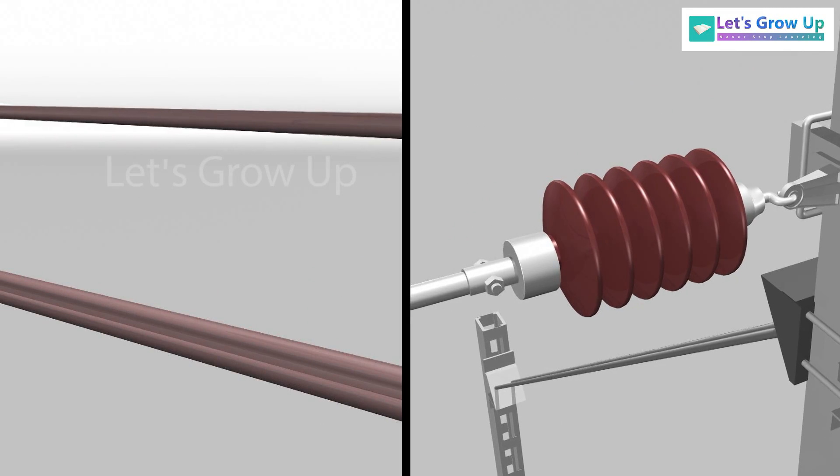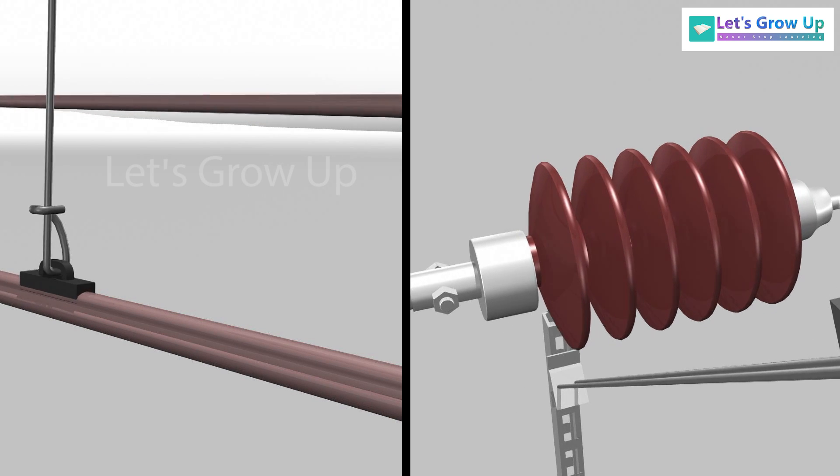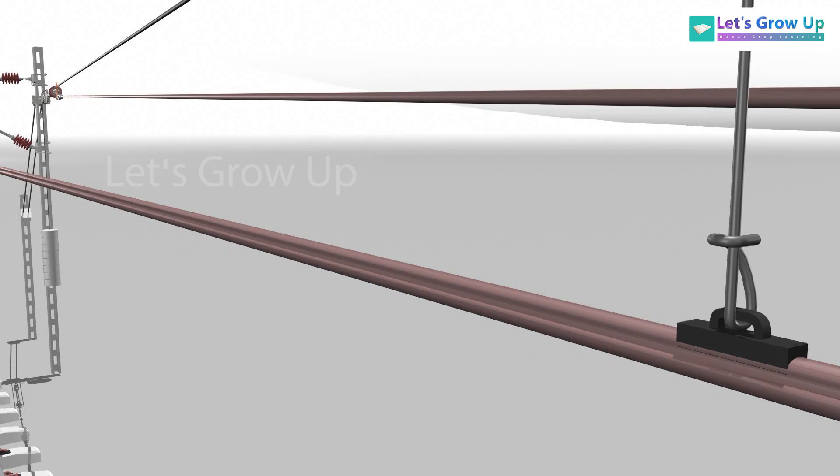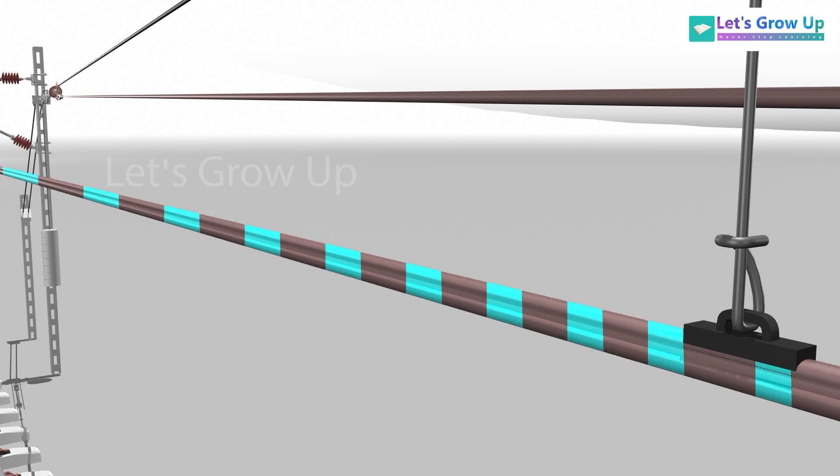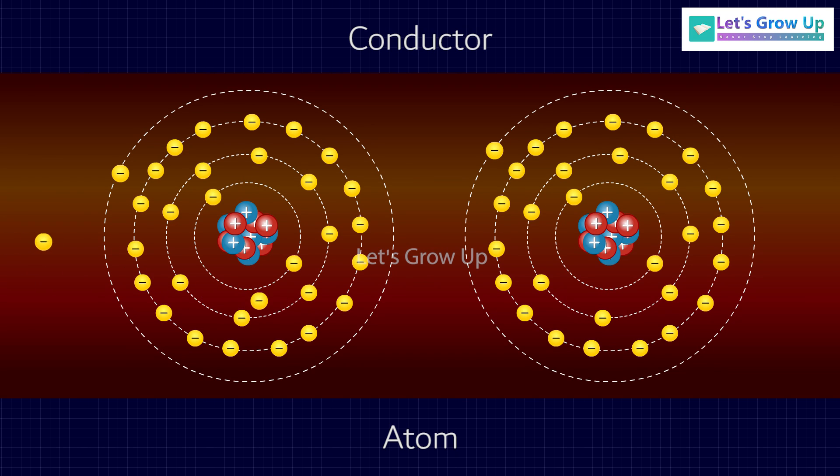First, we will learn the difference between conductors and insulators. Conductors are objects or materials that electricity can flow through easily. Because these materials hold their electrons loosely, electricity flows through these materials easily. These are the atoms of conductor.